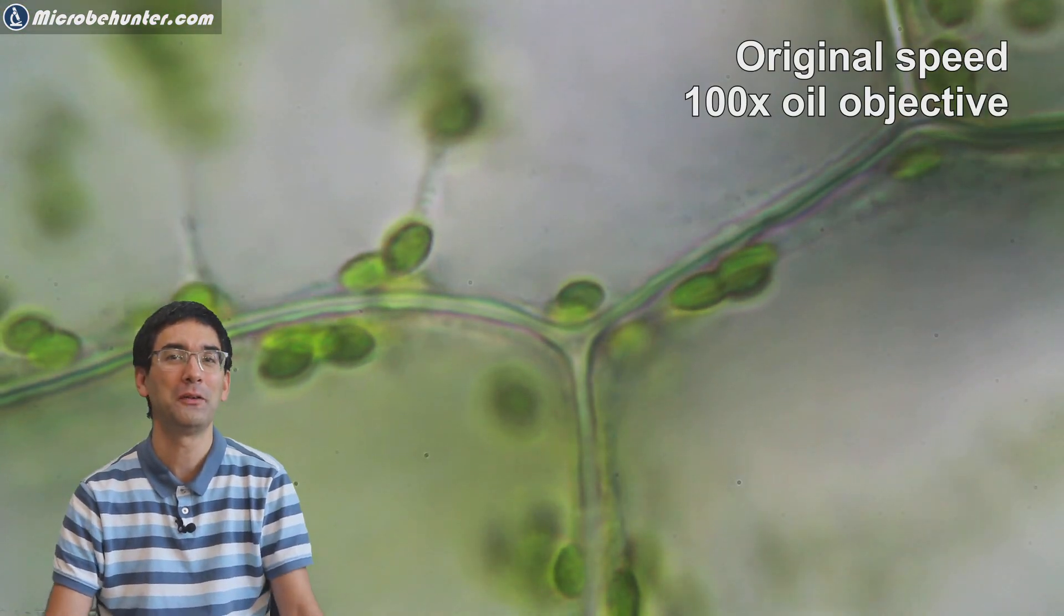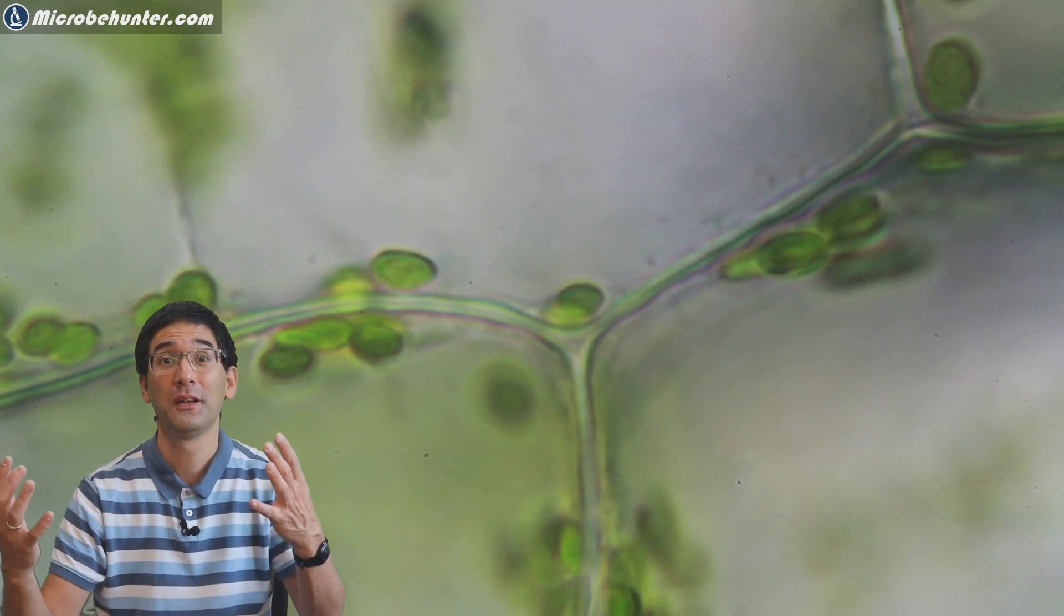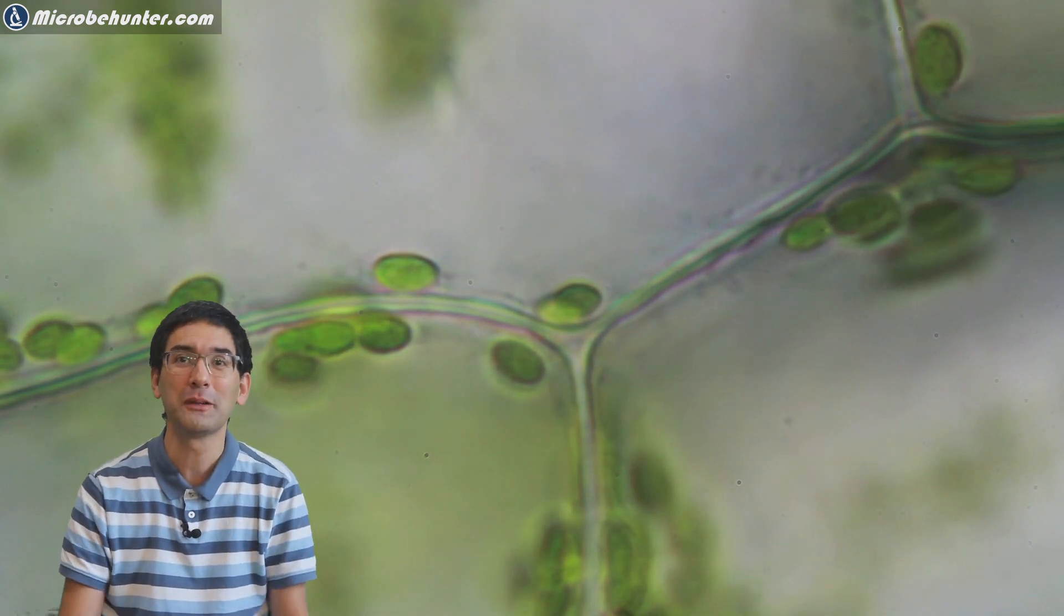There are a whole bunch of interesting little experiments that one could do now, like change the light color or the light intensity or temperature and then see how the chloroplasts move differently depending on the different environmental factors.